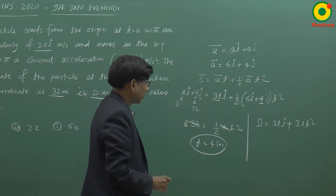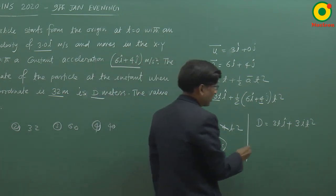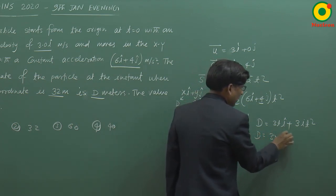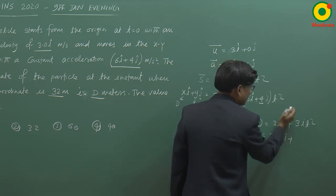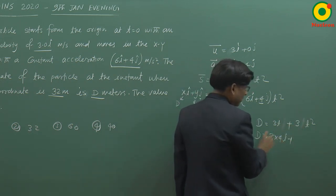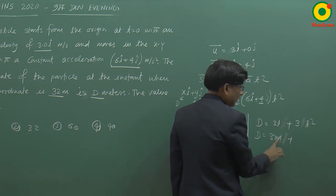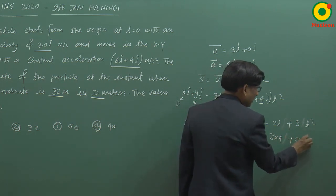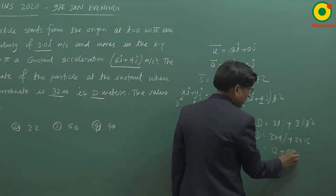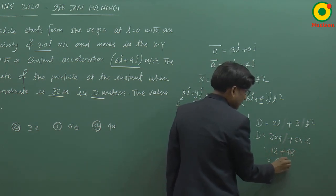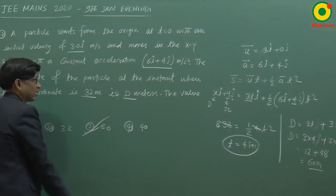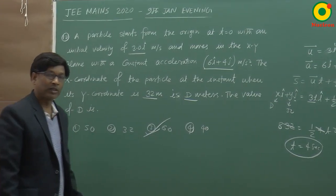3t i cap plus yahan dekhenge half 6 t square, yaani 3t square. Yahan par t ka value 4 hamein pehle se pata hai. 3 into 4 plus 3 into 16, to 12 plus 48 jo kiya gaya 60 meter hai. To jo d ka value poocha gaya hai woh aa gaya 60 meter, yaani 3rd option correct option hoga.